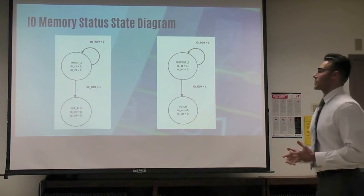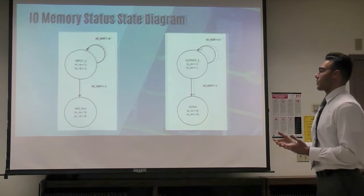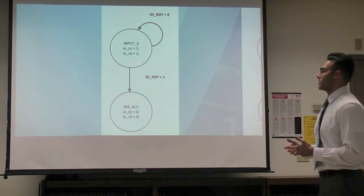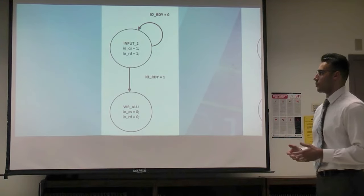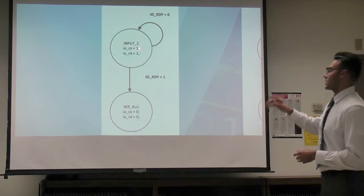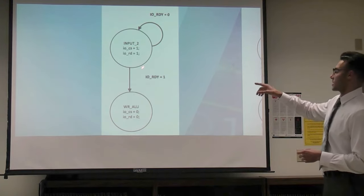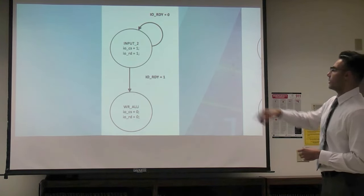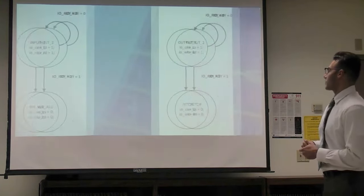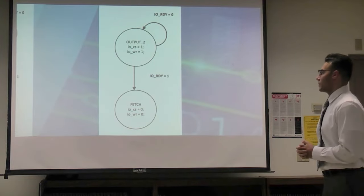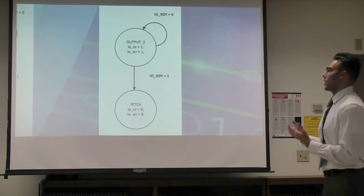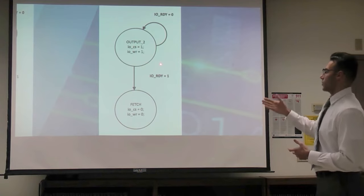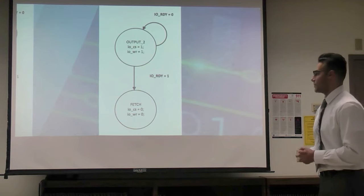IO memory is the same concept. The processor waits for the ready signal from IO memory. Once it gets the signal, it will transition to the next state right away. For the write, same as data memory — it waits for that ready signal, and once it gets it, it transitions to the next state.